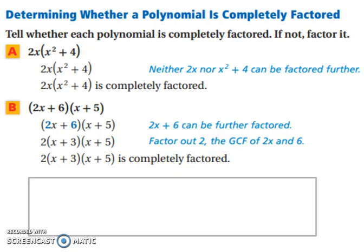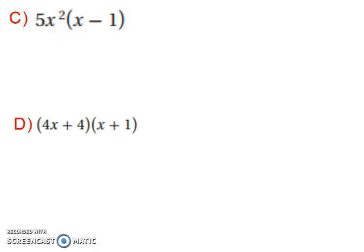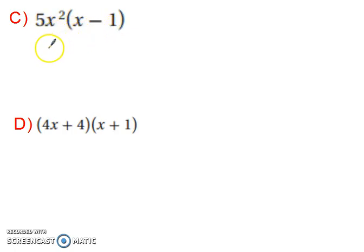Take a moment, pause the video, and try the next two on your own. Now let's look at them together. For example c, we have 5x squared times the quantity x minus 1. You can't do anything to either of them, so yes, it's completely factored.